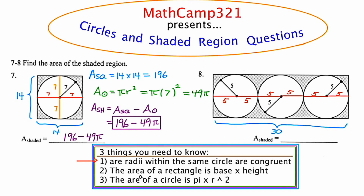Now I'm going to reorient the radii vertically by starting at the center of each circle and drawing a line segment up and a line segment down. Because all radii are congruent, those orange segments I've drawn are also going to be five. So the height of this rectangle from top to bottom is five plus five, or 10. I'm going to find the area of this rectangle by multiplying base times height, or 30 times 10. This product is 300.